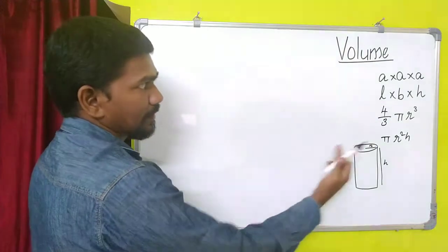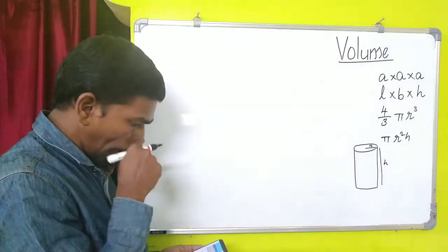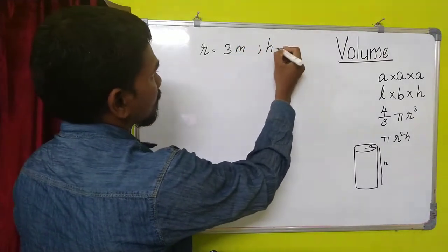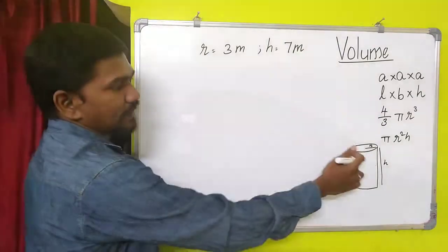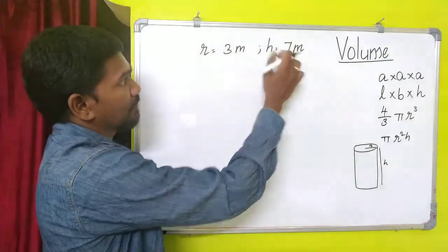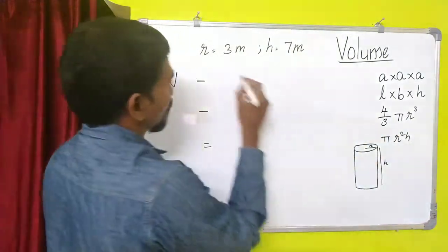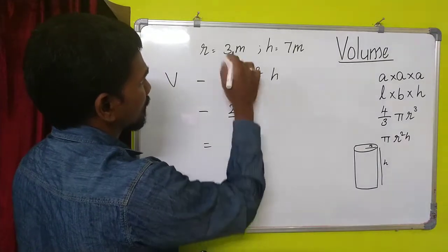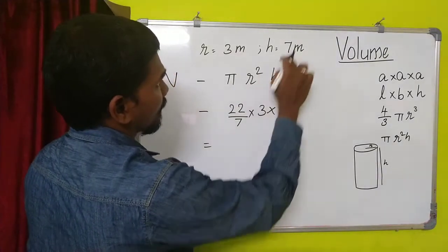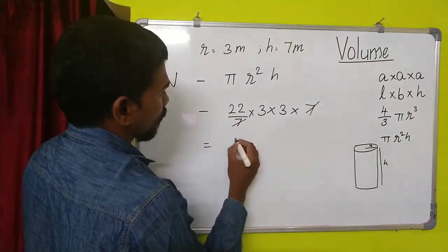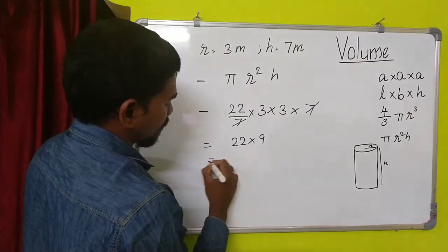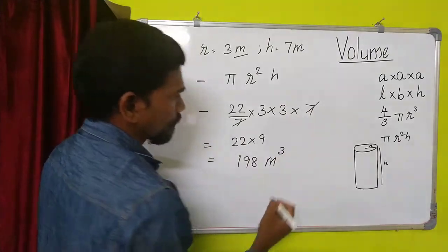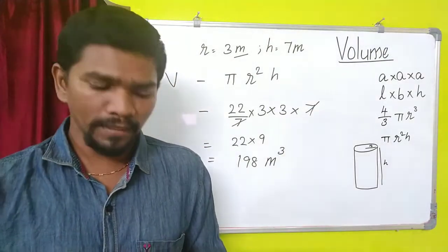Next is cylinder. Imagine the shape — it has a circle and a height. What they give is radius = 3 meters and height = 7 meters. The formula is πr²h. The value of π is 22/7, r is 3 so you put 3 two times, and height is 7. We cancel the 7, so finally we get 22 × 9 = 198 meters cube. So that is the volume of the cylinder.